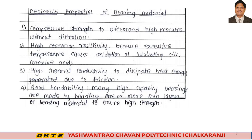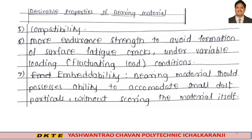Next property of bearing material is good bondability. Many high capacity bearings are made by bonding one or more thin layers of bearing material to a stronger backing material to ensure high strength. This bonding property is called good bondability. The fifth property is compatibility.